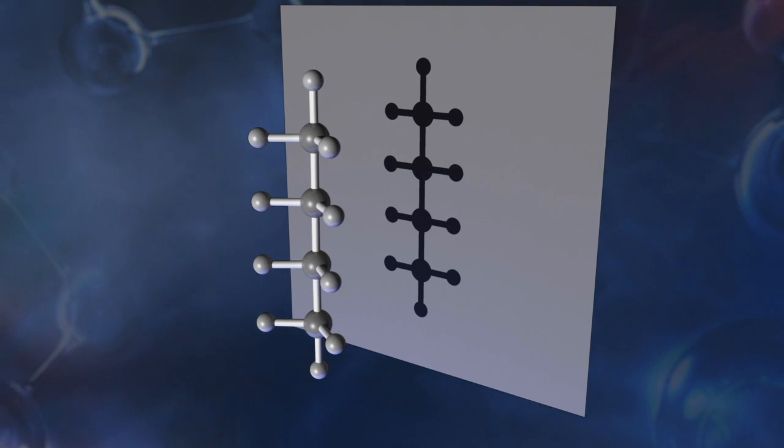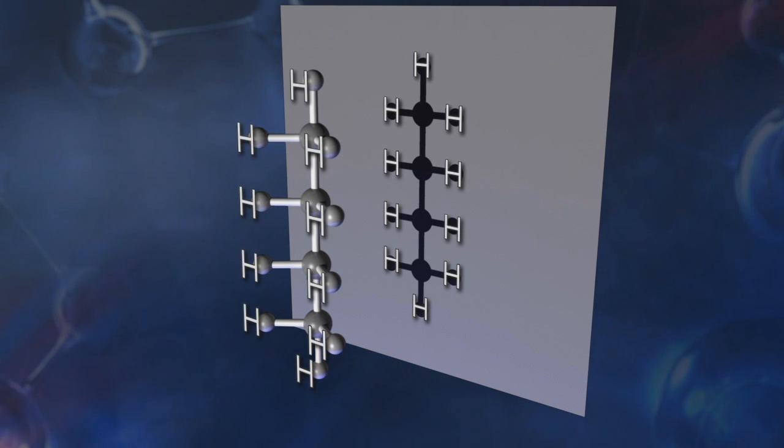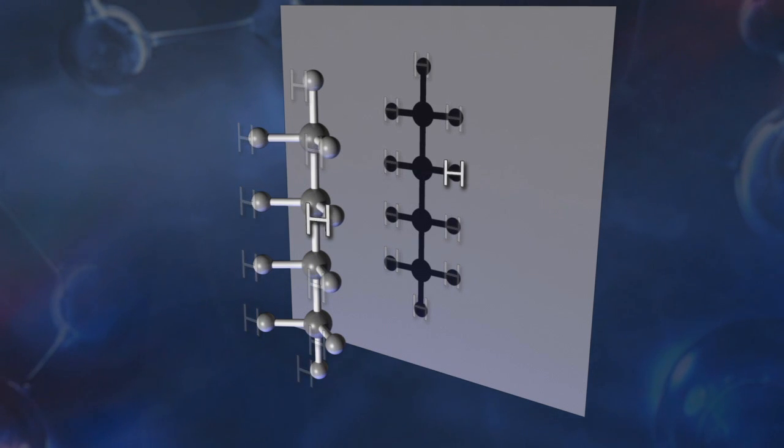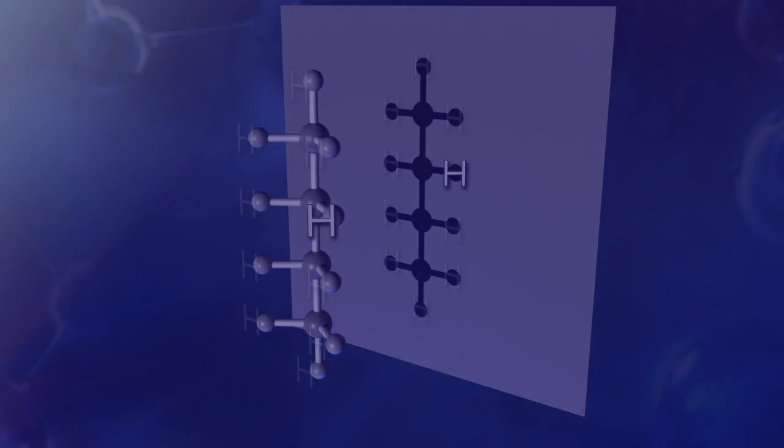Again, just as with the perspective formula, we can now point to a specific hydrogen in our butane molecule without confusing it for another connected to the same atom.